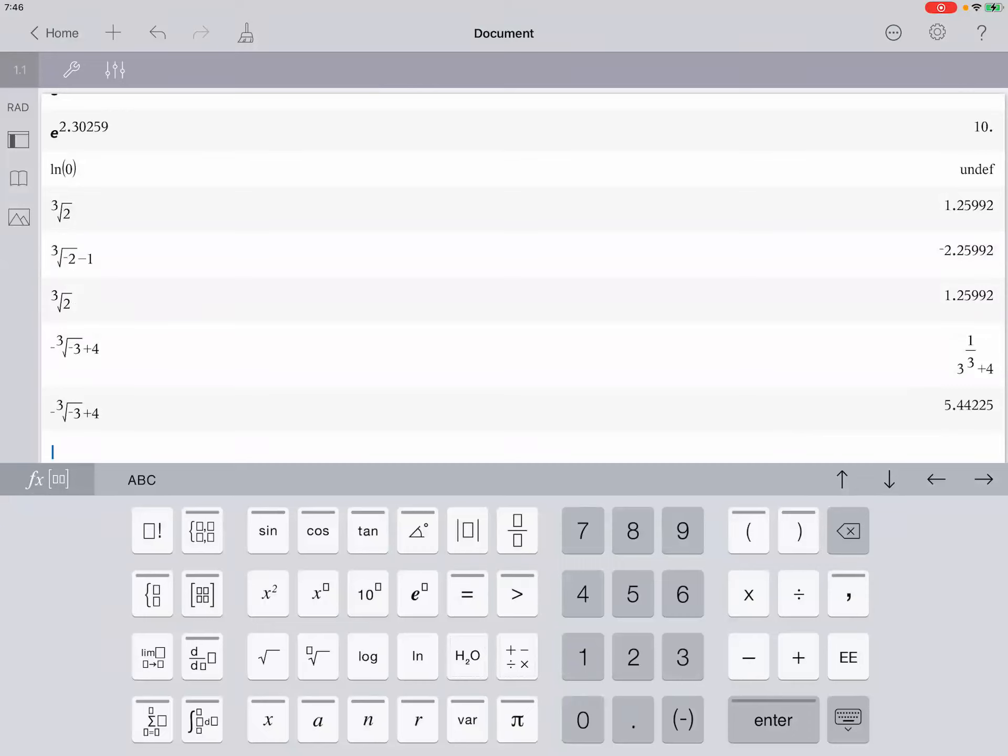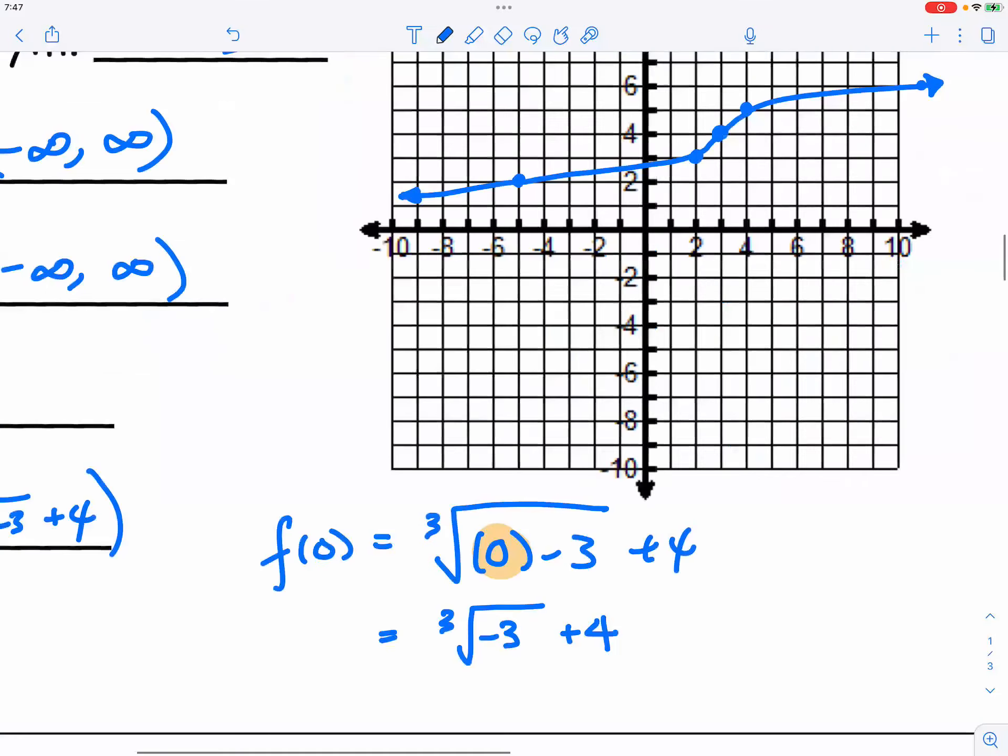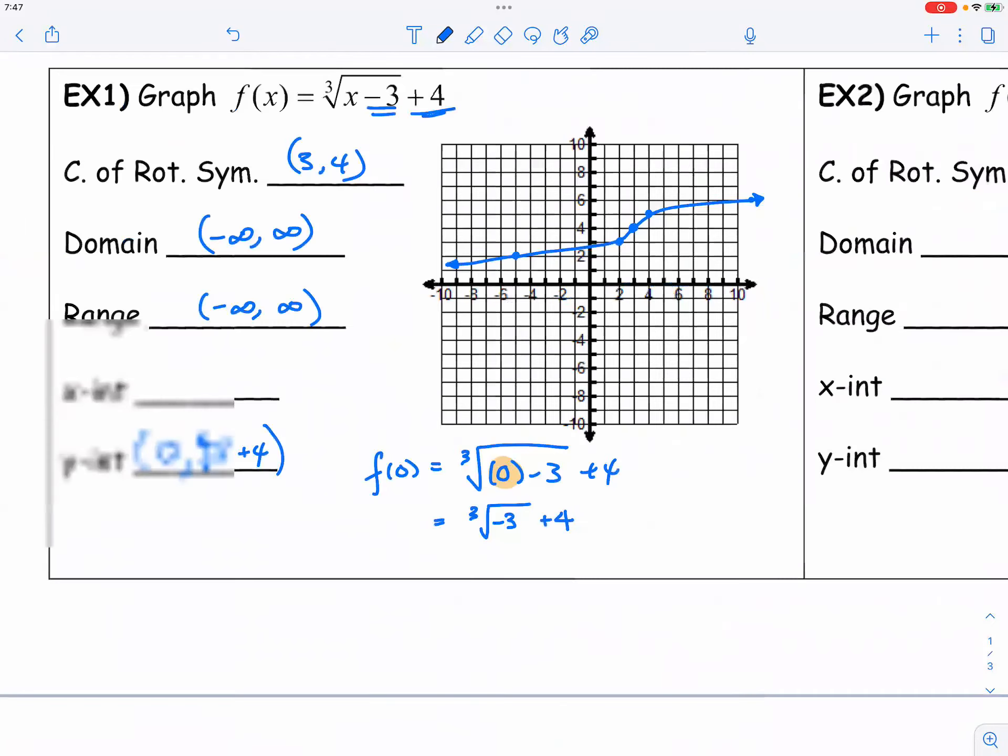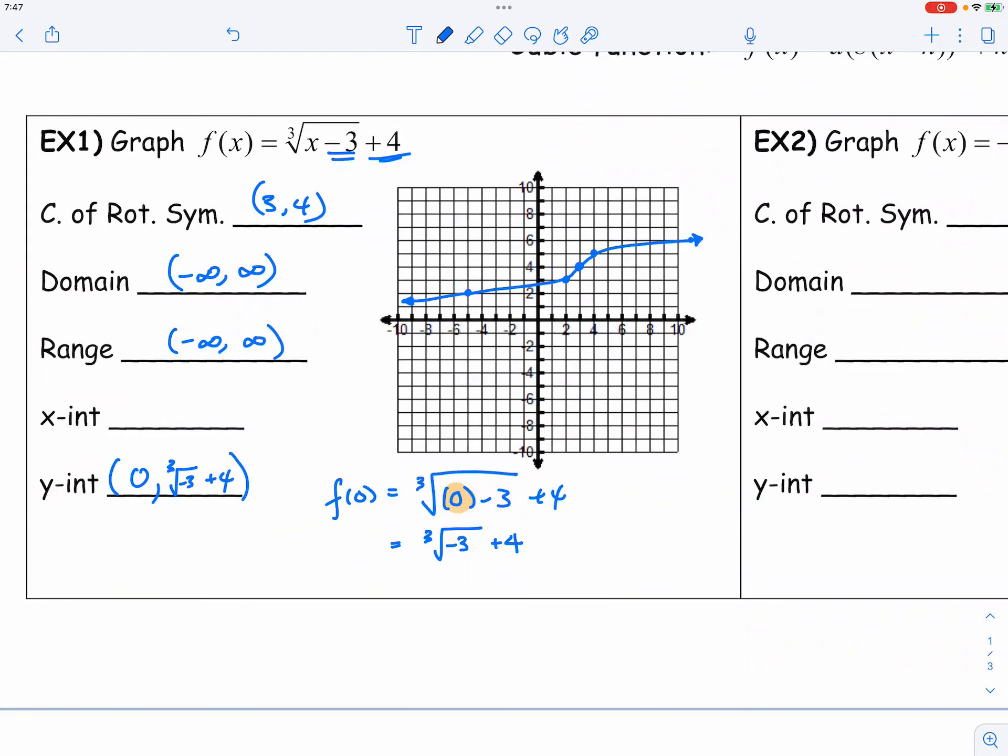5.4. Oh, hold on. No, I did the extra negative. It should be cube root of negative 3 plus 4. 2.55 or 2.56 if you round it to the second decimal place. 2.56, which makes sense, right? When we look at the graph, we're like, yeah, we're expecting a number between 2 and 3. So that makes a lot more sense.